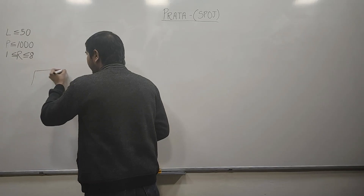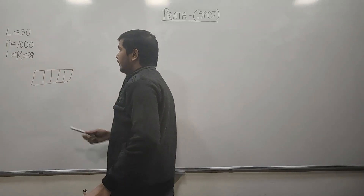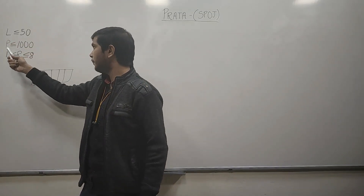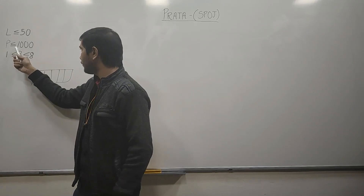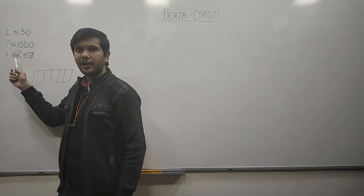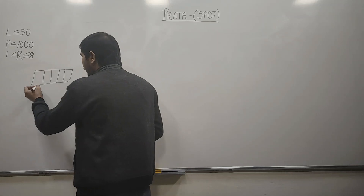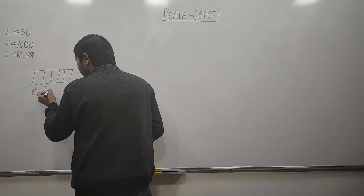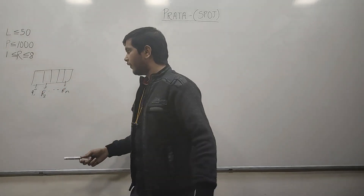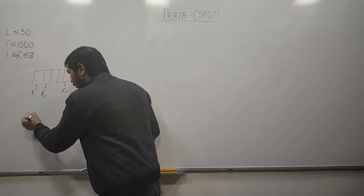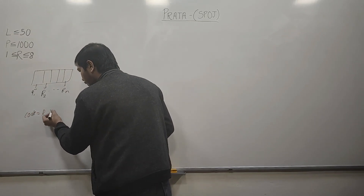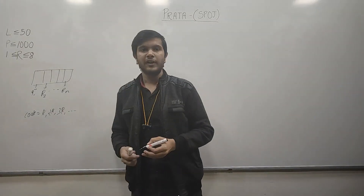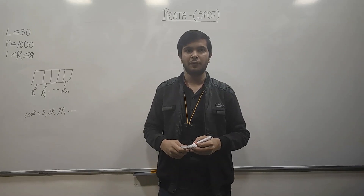In the question, we have given an array of size L. These are the constraints: L represents the size of the array, P represents the number of prattas we have to form, and R represents the rating of a cook, which lies between 1 to 8. Each element of this array represents the rating of a cook. A cook can form the 1st pratta in R minutes, the 2nd pratta in 2R minutes, the 3rd pratta in 3R minutes, and so on. So in this question, we have to find the minimum time to form P number of prattas.